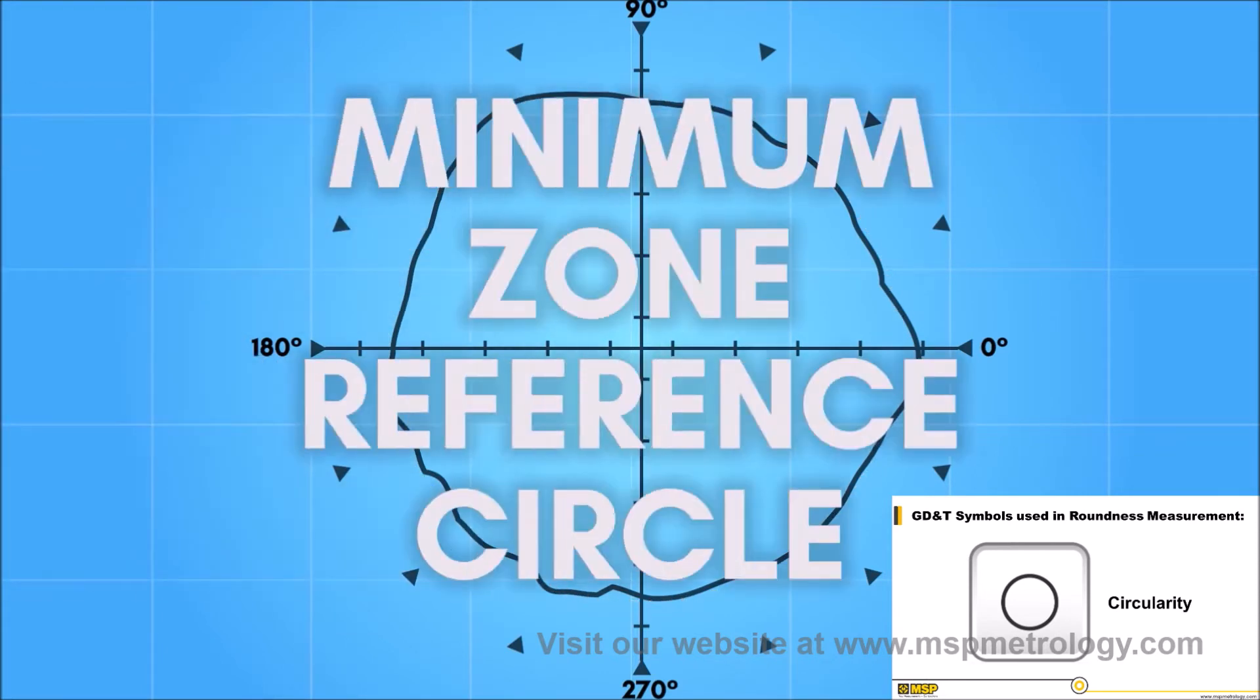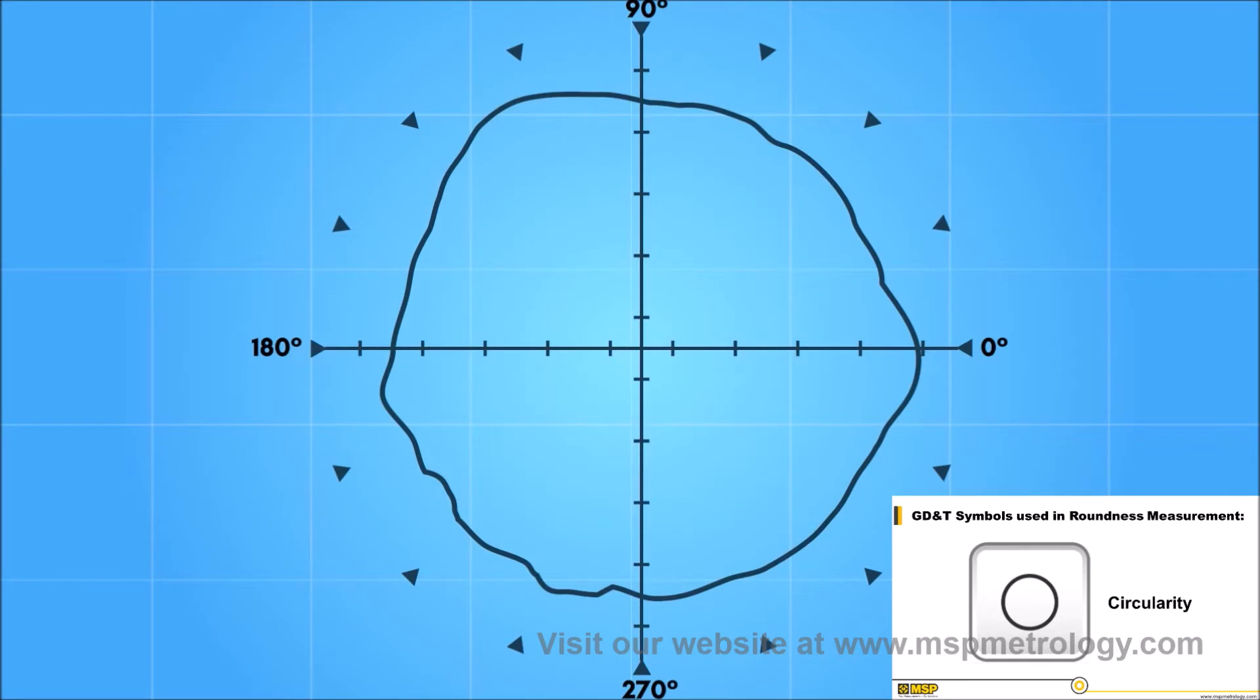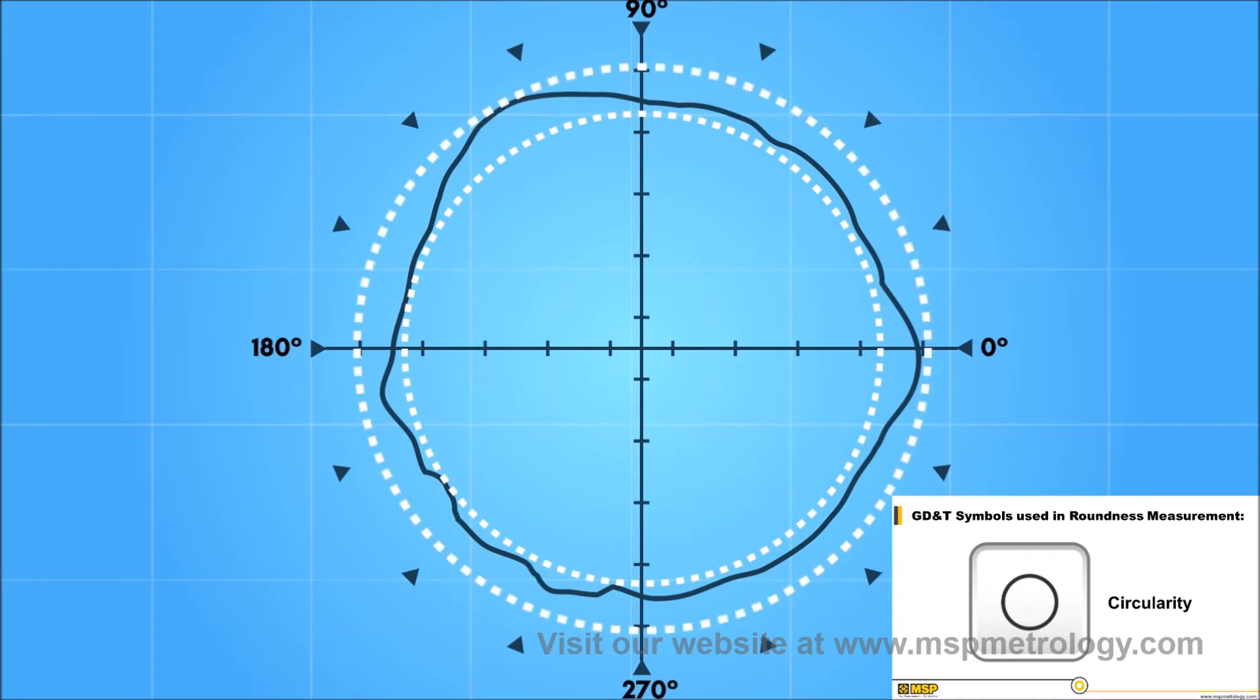A minimum zone reference circle is derived by first calculating the smallest circle that can fit inside of the measured data. Next, the smallest circle that can encompass the measured data is calculated. The out of roundness is given by the radial separation between these two circles that enclose the data.